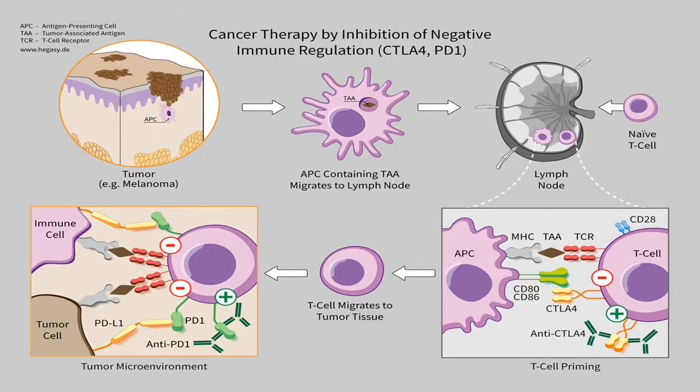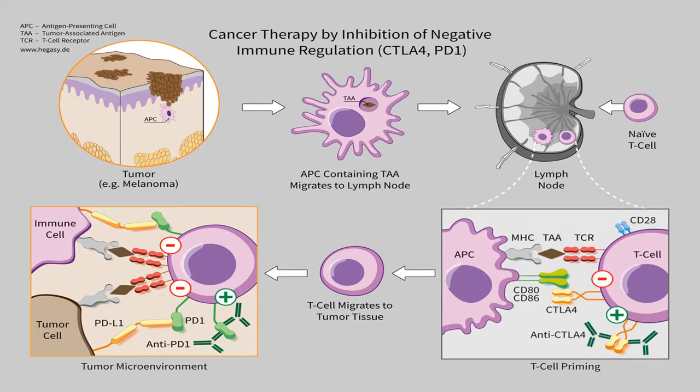Immunotherapy using checkpoint inhibitors aims to prevent the manipulation of these systems by cancer cells by blocking their ability to deactivate the T cells, thus utilizing the body's own defense mechanisms to fight cancer. Checkpoint inhibitors are antibodies that either attach to CTLA4 receptors to prevent their inhibitory effect, or form a barrier between the PDL1 molecules on the cancer cell and the PD1 receptors on the T cells. As the T cells are now no longer inhibited, they can proceed to destroy the cancer cells.